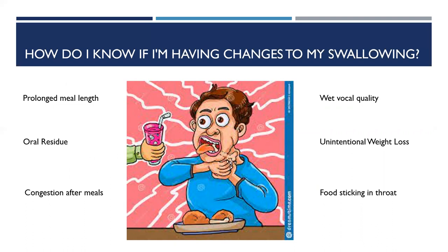There may be subtle changes to swallowing function that occur in adults and evolve over time that are not as obvious as coughing or choking while eating. These can include development of oral residue in a way not previously experienced, changes in tongue function — becoming more of a masher and less able to create a clean bolus — unintentional weight loss, and various other things to keep on your radar. These are things to mention to your providers, as they may not be obvious in the early stages.